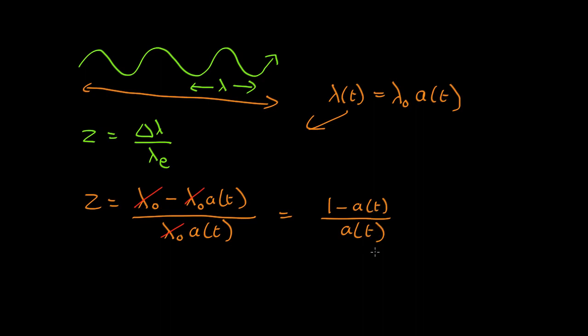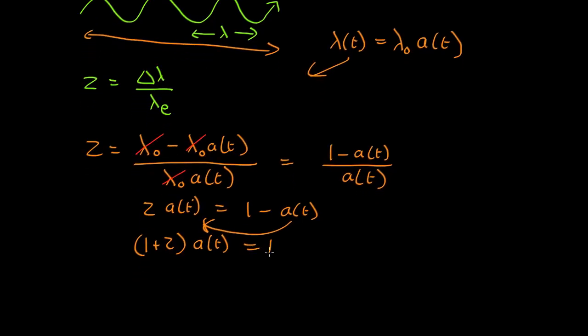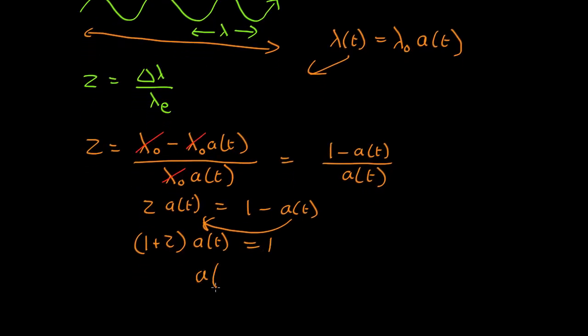We can rearrange that. Multiply both sides by a of t, and we get z times a of t equals 1 minus a of t. Move this across here, so you get 1 plus z times a of t equals 1. So a of t equals 1 over 1 plus the redshift.